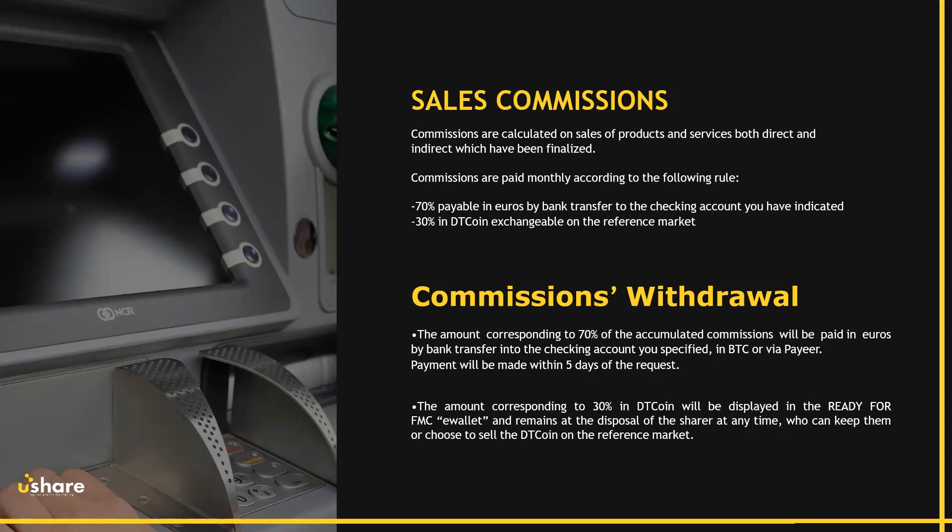Commissions are paid monthly according to the following rules: 70% in euros to a bank account that you provided, and 30% in DT coin, exchangeable on the reference market. The DT coin is our in-house cryptocurrency, which is based on the intrinsic value of the entire holding. The amount corresponding to 70% of accumulated commissions can be paid in euros to your bank account, but it can also be paid in Bitcoin or via PayPal.